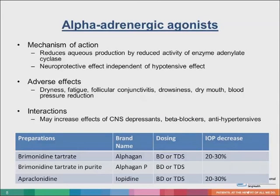Adrenergic agonists inhibit aqueous production and enhance aqueous outflow, allowing a 20% to 30% reduction in IOP. Several known side effects of apraclonidine, the first drug in this class, include development of an allergic follicular conjunctivitis and tachyphylaxis. The alpha-adrenergic agonist of choice is now brimonidine, which still carries some of these side effects to some extent. They have a short duration of action, requiring three-times-a-day dosing when used singly, which is why they have been delegated to a secondary role as a drug of choice. Adrenergic agonists are generally safe, but should not be used in children younger than six years of age, as they can cause central nervous system suppression.